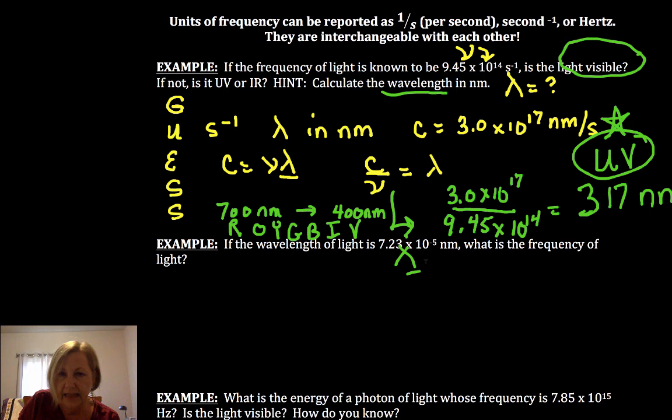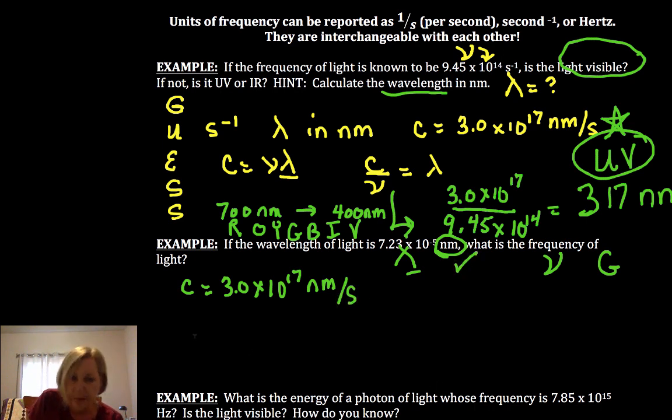Let's try the next one. This time I'm given a wavelength, I'm asked for a frequency. Since my wavelength is in nanometers, I'm following the GUESS method. As long as I use C as 3.0 times 10 to the 17 nanometers per second, my units are okay. So now we've got to get our equation. C is equal to lambda nu. This time I want to solve for frequency, so C over lambda is frequency.